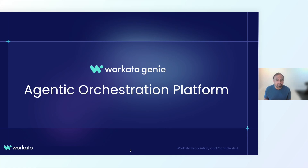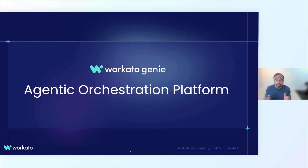Workado Agentic, or Workado Genie, is a new product that was launched at our user conference earlier this month. The way to think about this is it's an AI agent-based platform where you can, using the same ethos of Workado, build AI agents that can collaborate, understand various intents, and then take actions on various systems or orchestrate a full workflow.